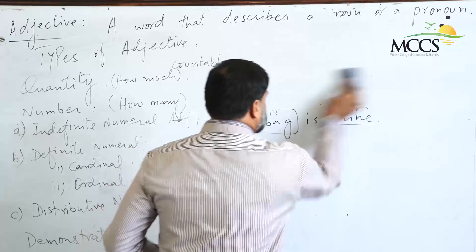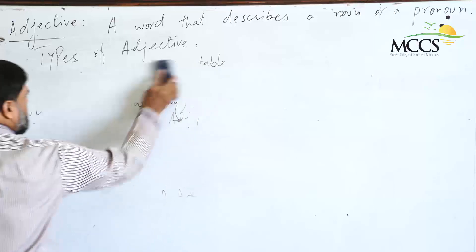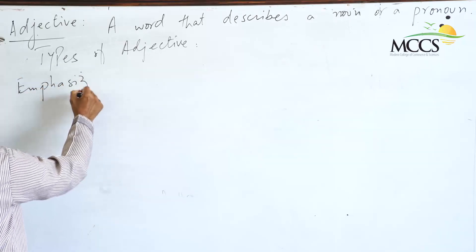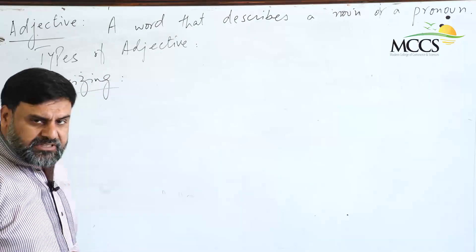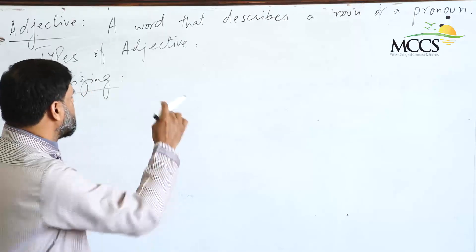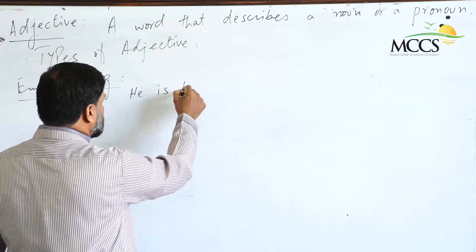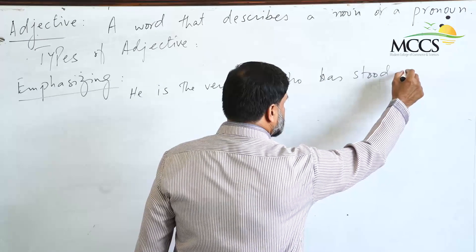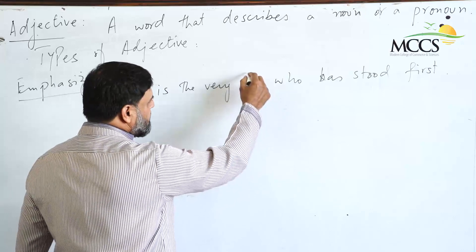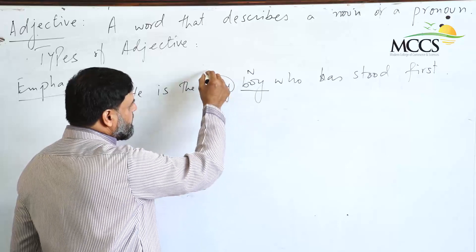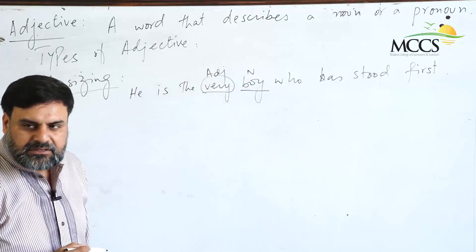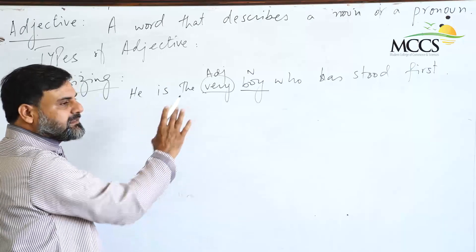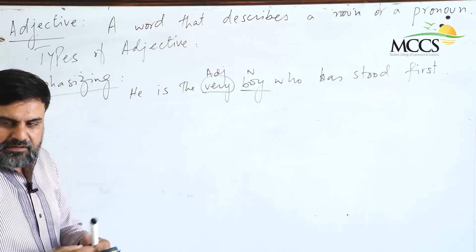The next type is the emphasizing adjective — adjectives used to emphasize a noun. For example: 'He is the very boy who has stood first.' Here the noun is 'boy,' and the word 'very' is used to emphasize it. So here 'very' is used as an emphasizing adjective. Normally the word 'very' is used as an adverb in most cases, but in rare cases where it comes alongside its noun, we call it an emphasizing adjective.